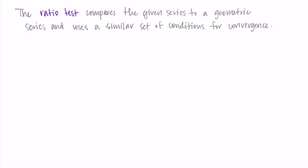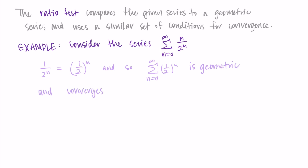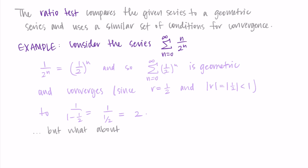Let's try an example. I'll state the ratio test in its entirety at the end of the video. Consider the series: the sum from n equals 0 to infinity of n over 2 to the n. If that n in the numerator wasn't there and we just had 1 over 2 to the n, this would be geometric with r equal to one half, and it would converge since the absolute value of one half is less than 1. We could even find where it converges using a over 1 minus r, giving 1 over 1 minus one half, which equals 2. But what happens when we have n times 1 over 2 to the n, like we do here?